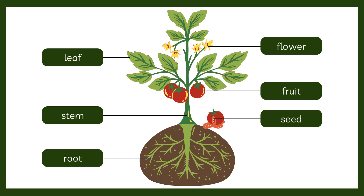Stems are also important for transportation — they provide transport for food, water, and nutrients. The parts of plants are roots, stems, leaves, flower, fruit, and inside the fruit there are seeds. Remember this — it is very important — and we will discuss each part in detail in the next slide.